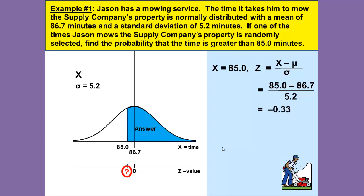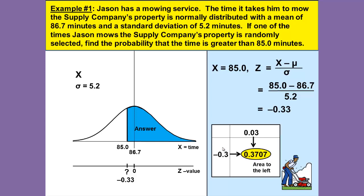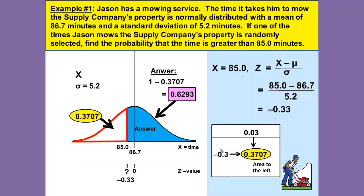Calculating that gives us z equals negative 0.33. We mark that on our z-score number line and look it up in the table. The table gives the area to the left, so looking up negative 0.33 gives us 0.3707 — the area to the left. Since we need the area to the right, we compute 1 minus 0.3707, giving us 0.6293 as our answer.